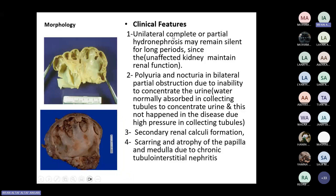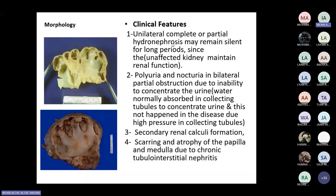Unilateral complete or partial hydronephrosis may remain silent for a long time because the unaffected kidney takes over the functions. It presents with clinical symptoms when there is infection and pyelonephritis. Symptoms include polyuria, nocturia, secondary stone formation, pain, scarring and atrophy of the papilla leading to tubulo-interstitial nephritis, along with fever and flank or costovertebral angle pain.